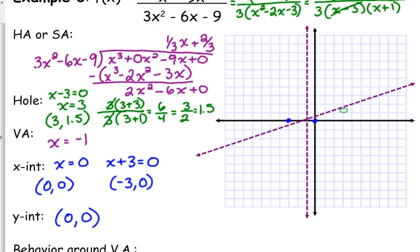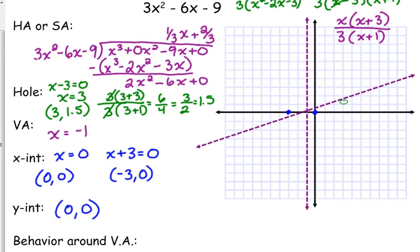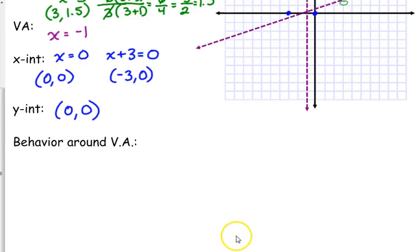I'm pretty sure how I can fill in the rest of this graph, but let's go through that behavior around the vertical asymptote one more time. Let me rewrite the simplified version of my function just so I have it for reference.